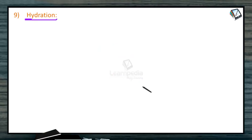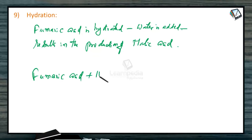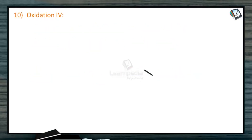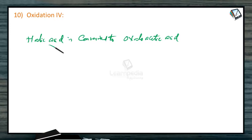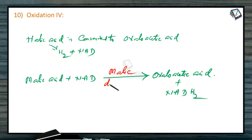The next reaction is hydration. Fumaric acid is hydrated — that is, water is added — to produce malic acid. The reaction: fumaric acid plus water gives malic acid. The enzyme is fumarase. The following reaction is the fourth oxidation: malic acid is converted to oxaloacetic acid, with removal of hydrogen accepted by NAD to produce NADH₂. The reaction: malic acid plus NAD gives oxaloacetic acid plus NADH₂. The enzyme is malic dehydrogenase.